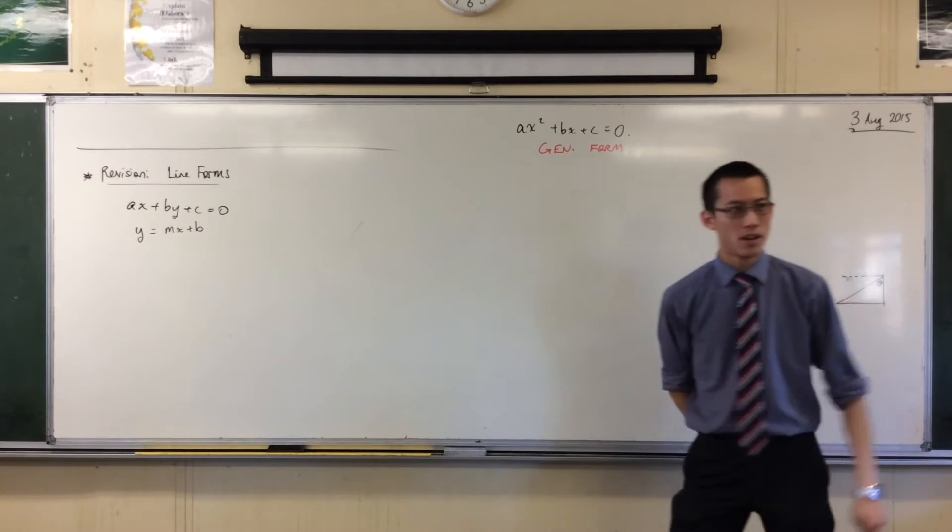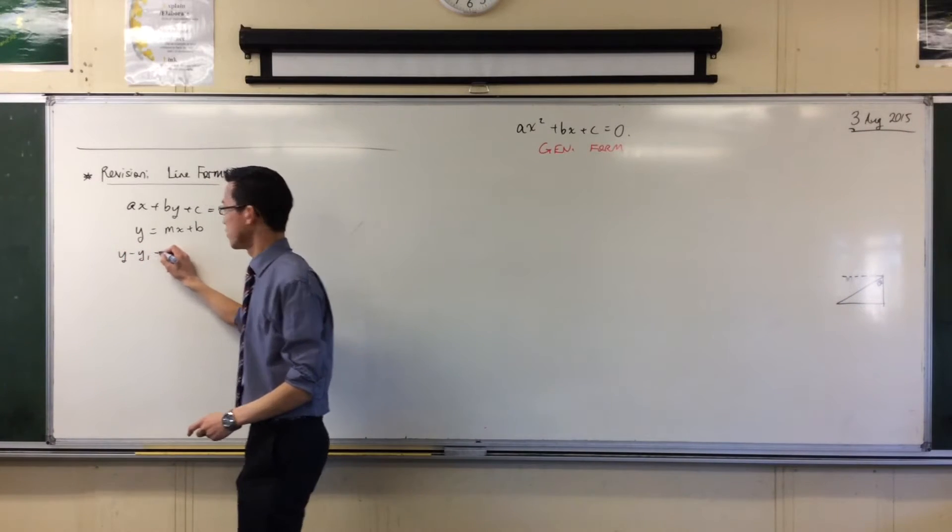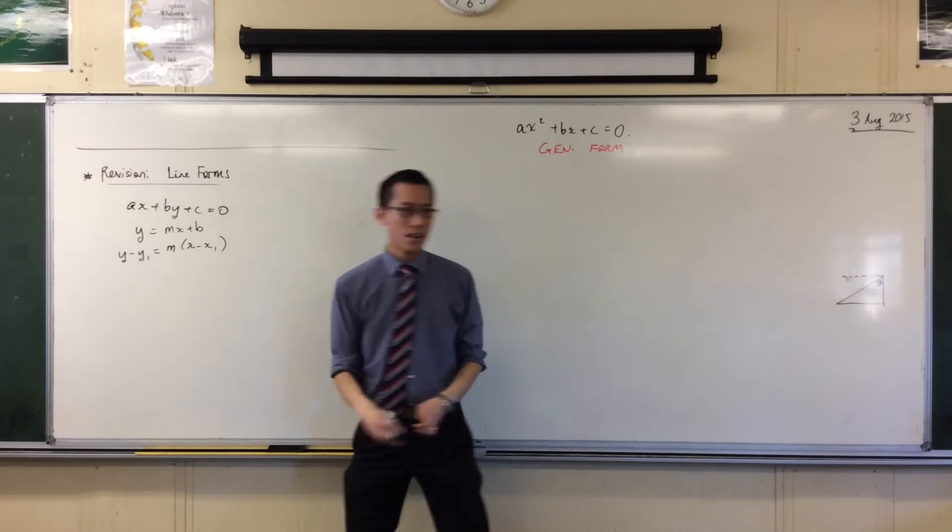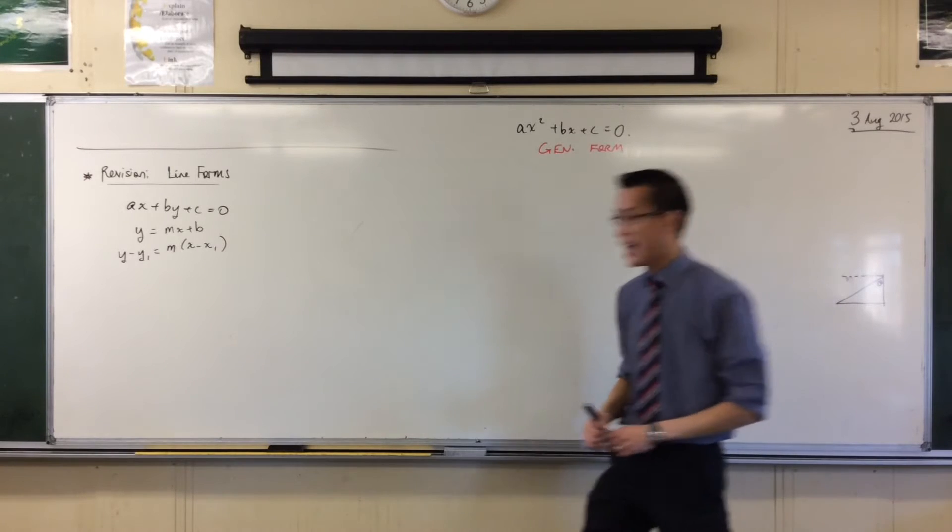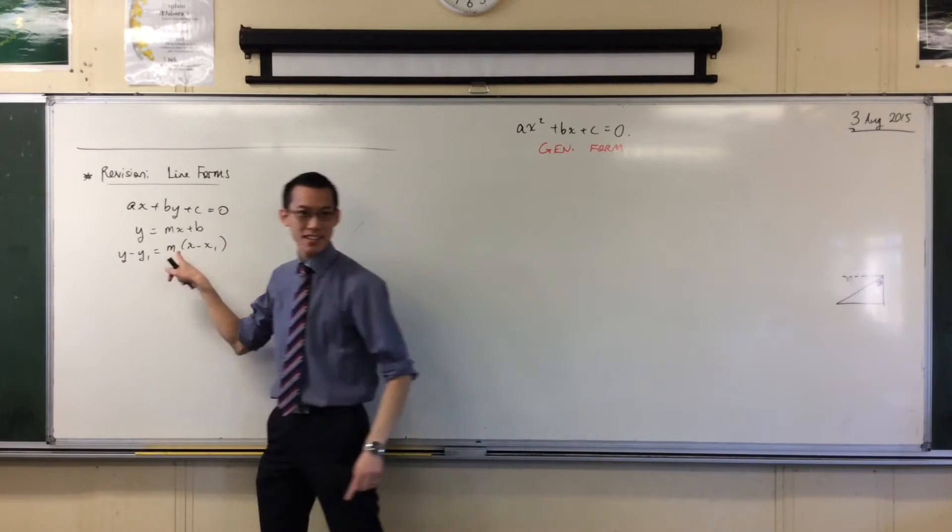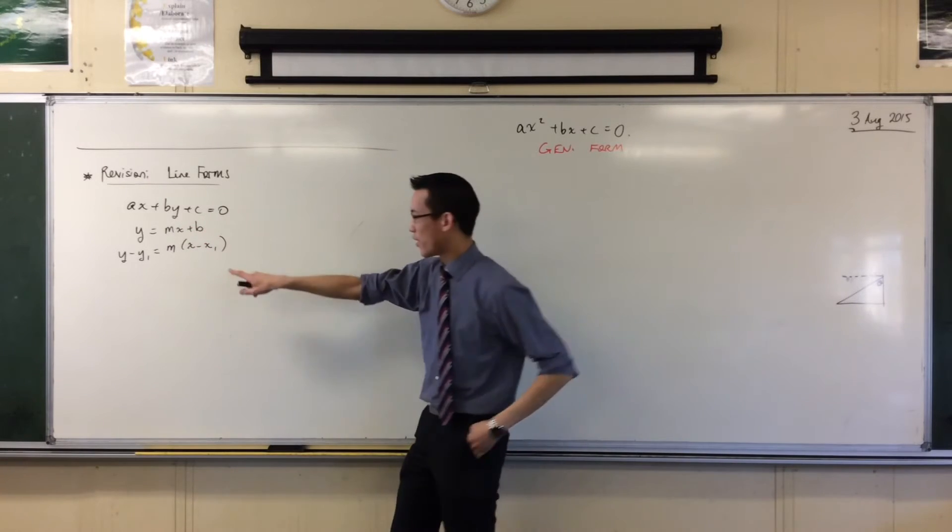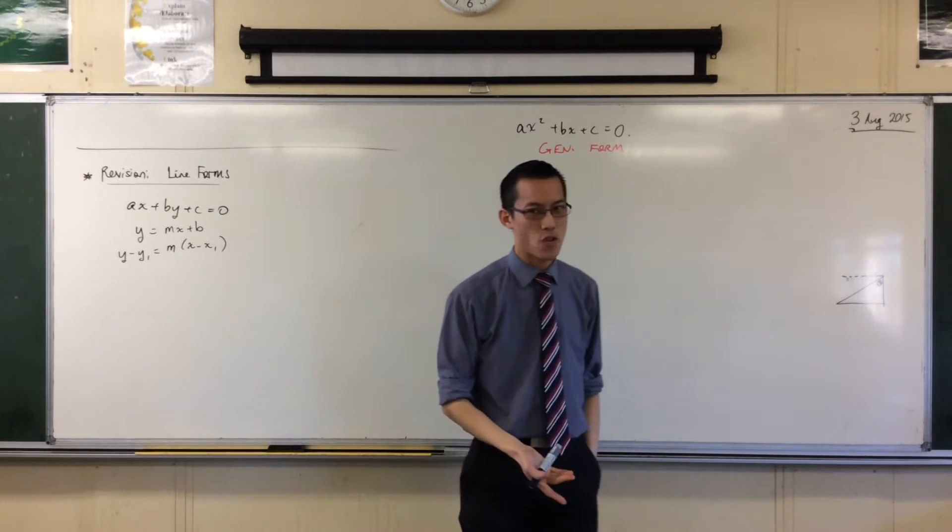Good. So, again, a new form, a new name. What's this one called? It's called point gradient form. Right? We've done gradient intercept, because X1, Y1 is the point it passes through and M is its gradient.